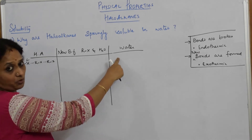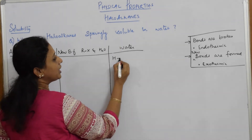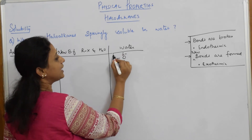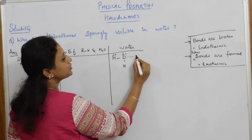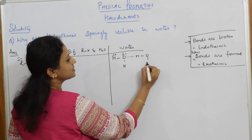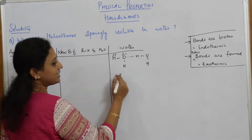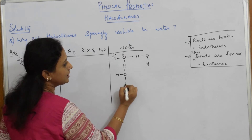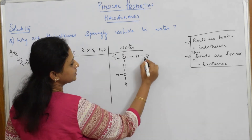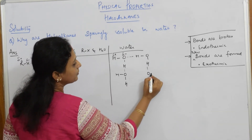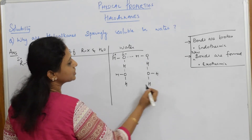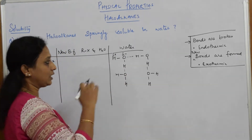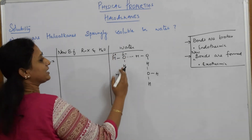For water, hydrogen is electropositive and oxygen is electronegative. Water forms hydrogen bonds — O is bonded to H, and those H atoms are bonded to neighboring oxygen atoms. So to dissolve the haloalkane, I also need to break the hydrogen bonds in water.